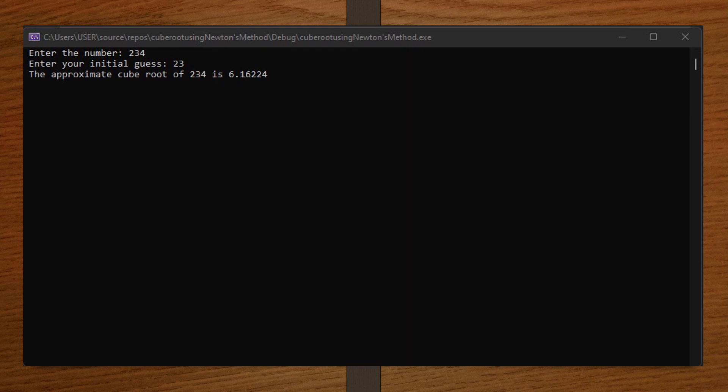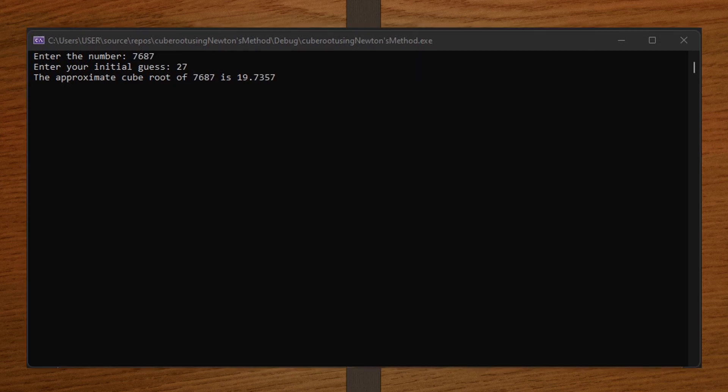Let's try another one: 7687, my initial guess again wrong, 27. You can see that it still computed for the correct one which is 19.735. So Newton's method computes the cube root in spite of your initial guess. It will still give you the correct answer.